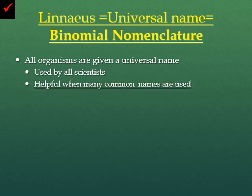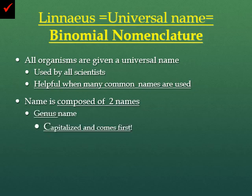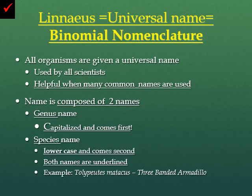This is very helpful considering a lot of common names are used depending on where you're at. The name is comprised of two names, just like a first and last name. The genus is the first name — it's capitalized and tends to come first. The second is the species name, which is lowercase and comes second. When freehanding these, both names will be underlined — both the genus and the species. If you're typing it, you can use italics, which also works.